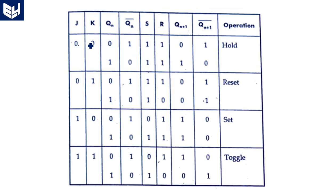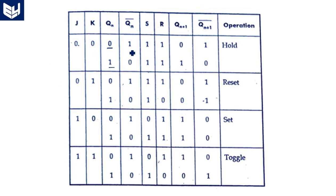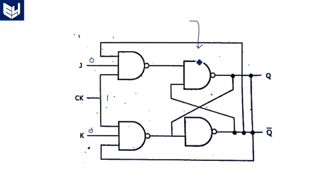Now, coming to the operation of this clocked JK latch. The entire operation is explained when clock is equal to 1. When clock is equal to 0, there is no change — simply the previous state is continued. When clock equals 1, the circuit comes into operation. When J and K are both 0, the previous state is continued.